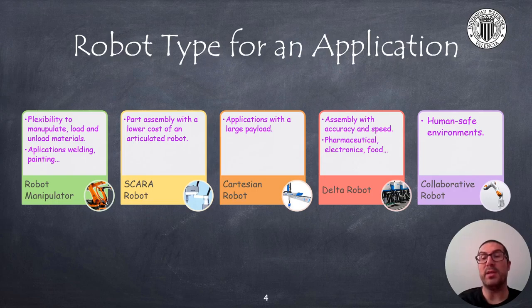On the other hand, Delta robots are ideal in industries such as pharmaceuticals, electronics, and food, thanks to their great precision and speed. Finally, in applications where the robot has to work with humans, collaborative robots are probably our best option.